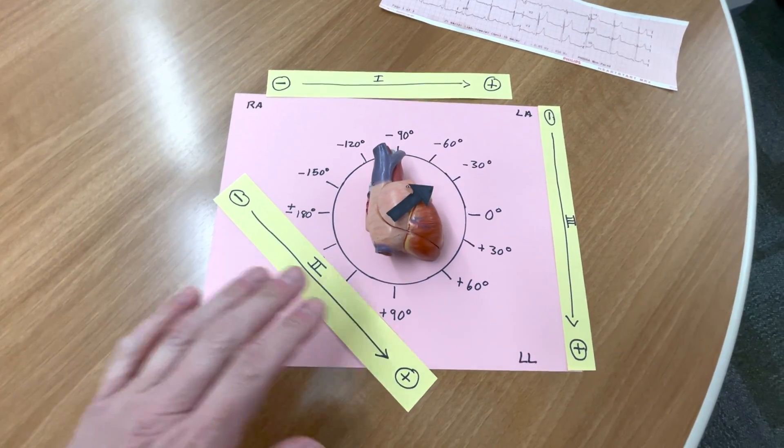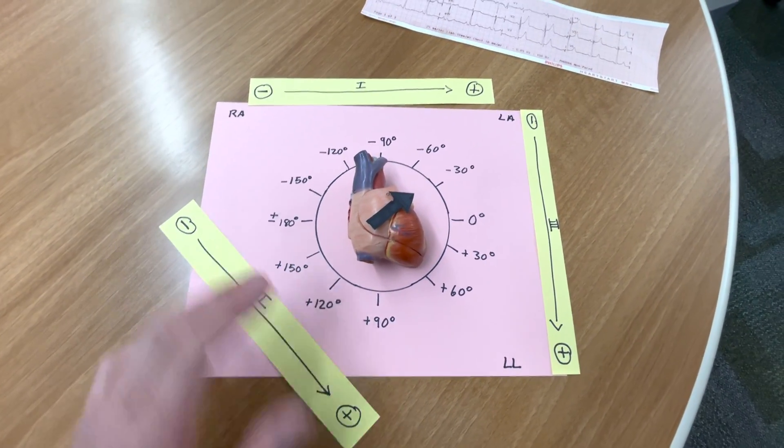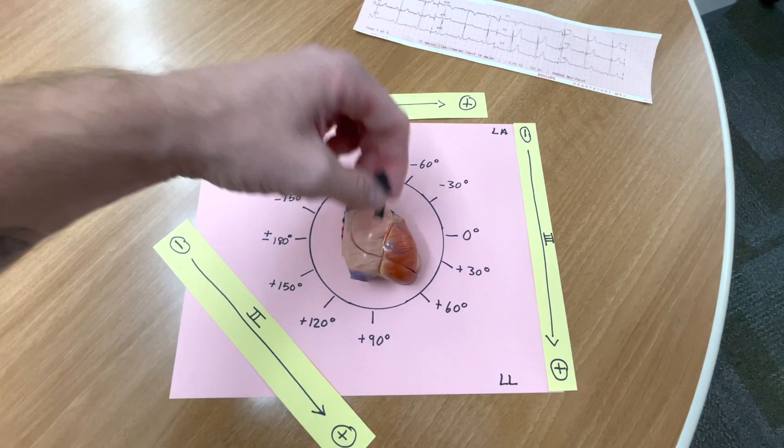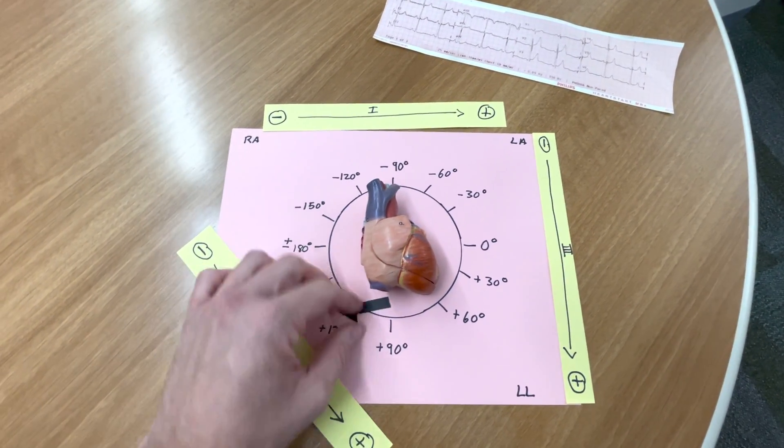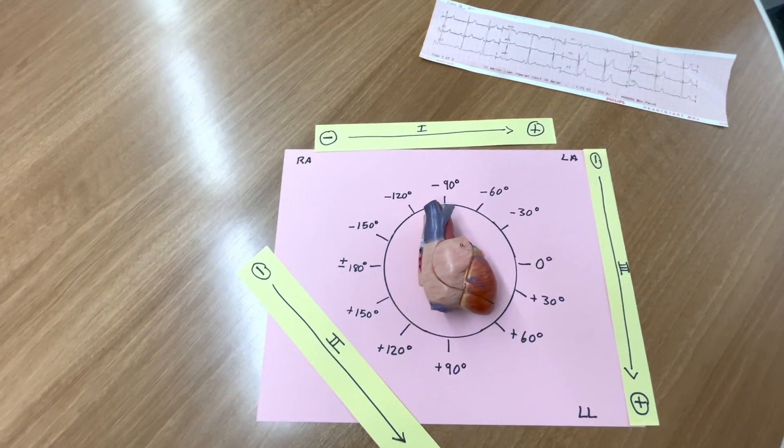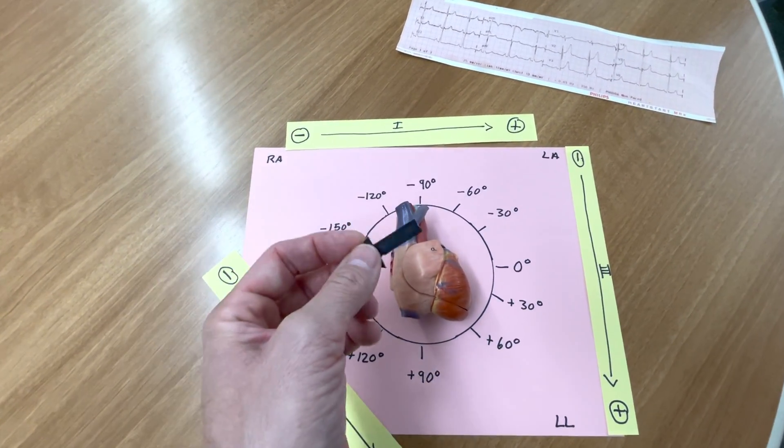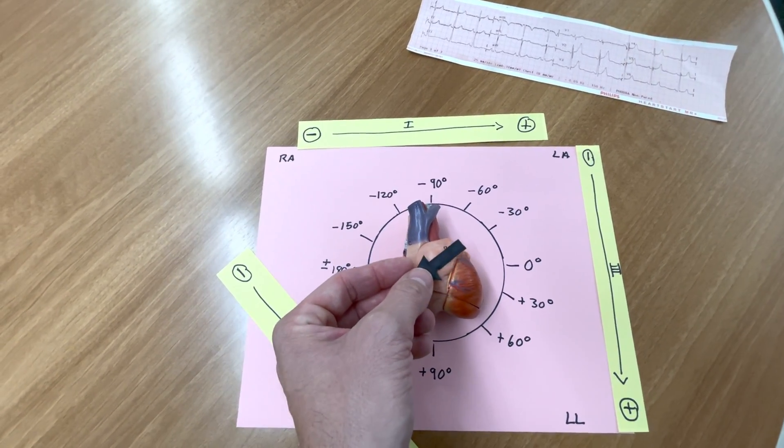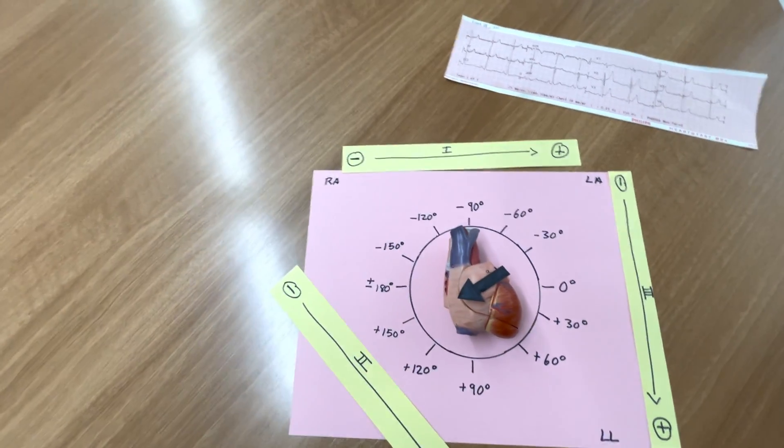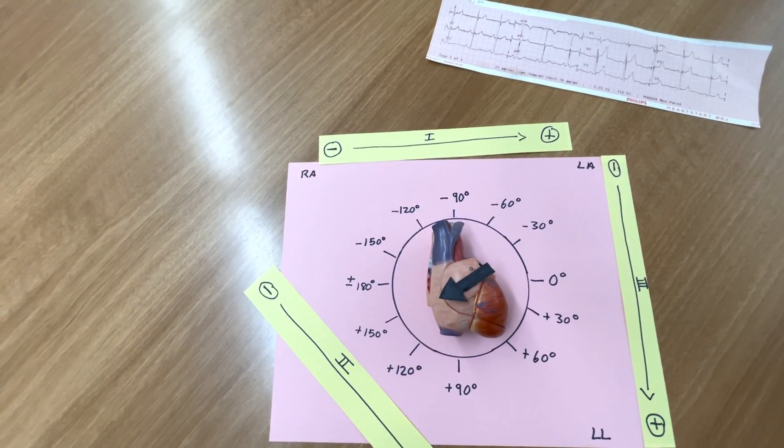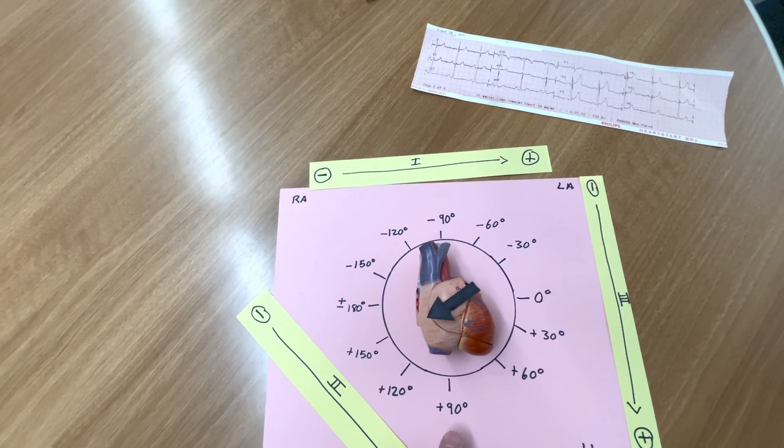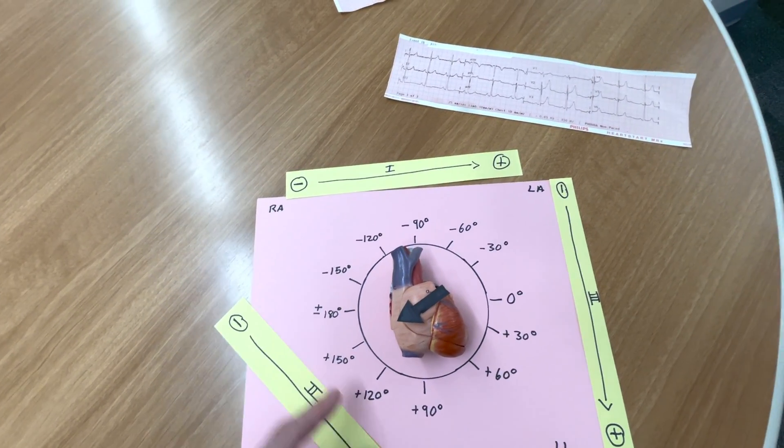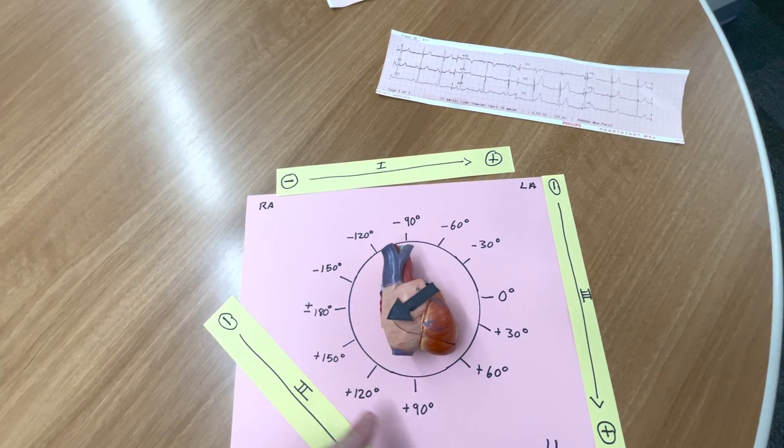So, let's talk about right axis deviation. Rightward deviations are going to be the arrow pointing in, see if I can get that arrow to stay on the heart, going to be that arrow, that mean direction of electrical activity moving in that direction.